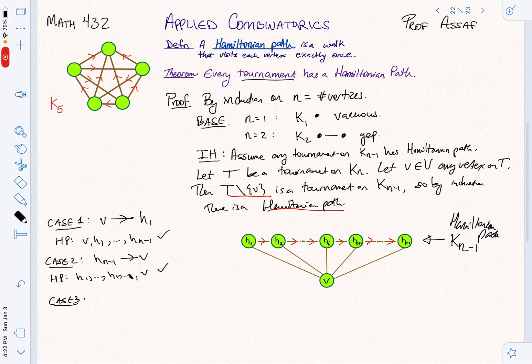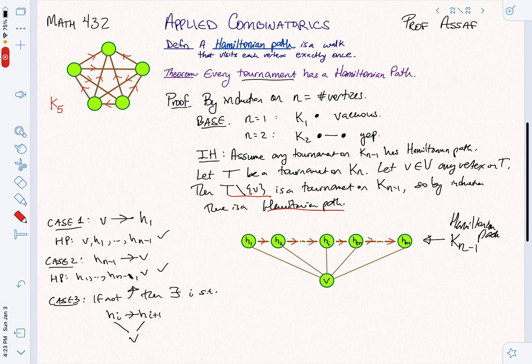Now, case 3. If not either of those previous cases, then there exists I such that we have the following situation. We have HI, HI plus 1, and we have V. Here are my edges. I claim that I have to have down followed by up. Let's see why that's the case. I've just said that I don't have this, which means I've got to have this. Otherwise, I could tack V onto the front. Similarly, at the end, I have to have an arrow like this. Otherwise, I could tack V onto the end.